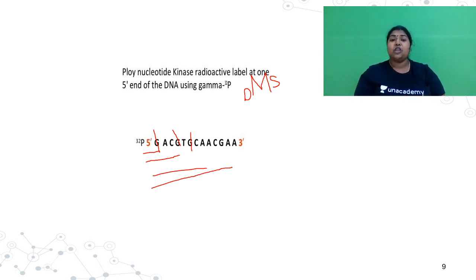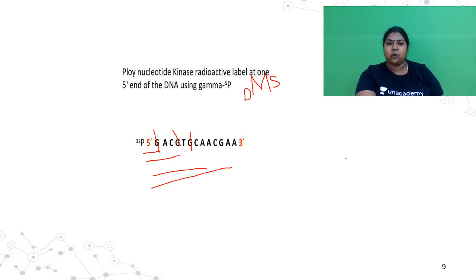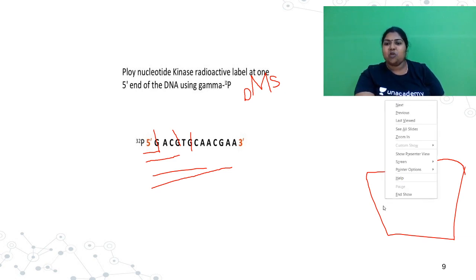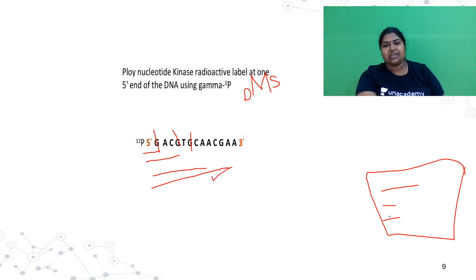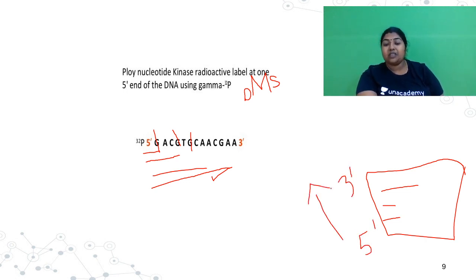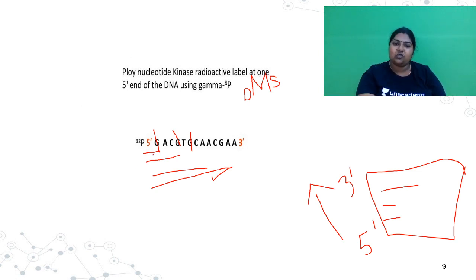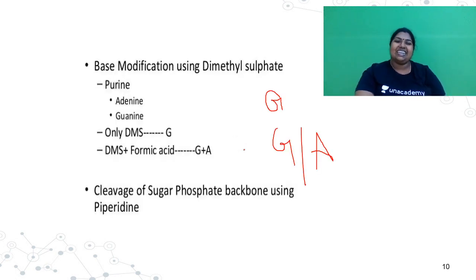When you separate the fragments on a gel, they migrate by size. Longer fragments are stuck at the top; smaller ones migrate to the bottom. The 5' end will be at the bottom (smallest fragment) and the 3' end at the top (longest fragment). So you must always read the sequence from bottom to top, moving from 5' to 3' direction.